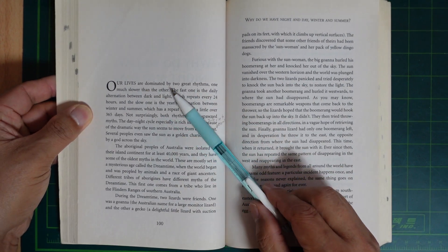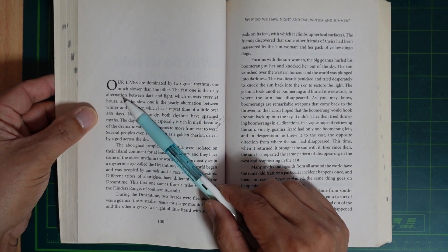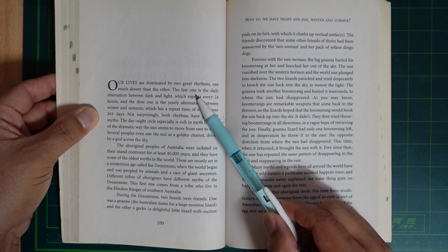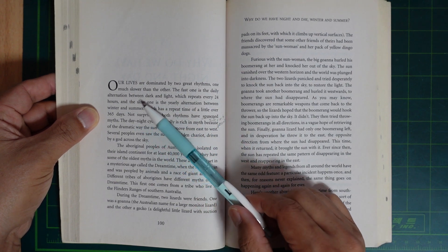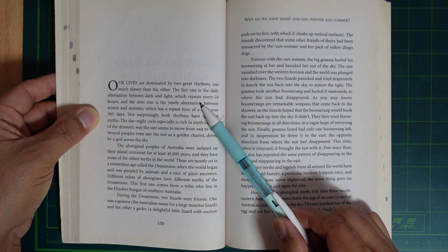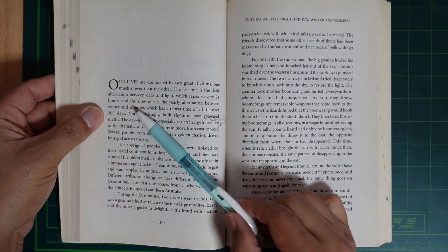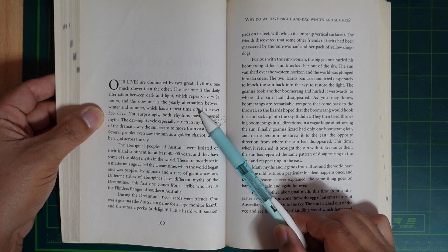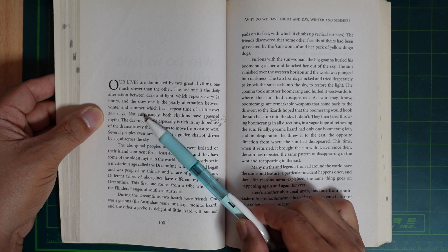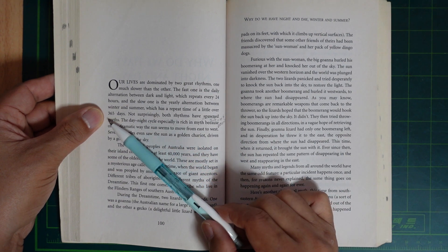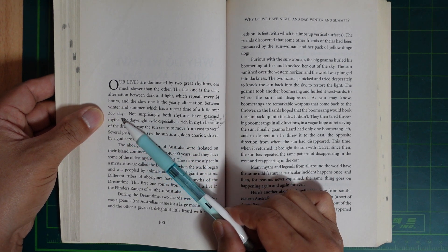Our lives are dominated by two great rhythms. One much slower than the other. The fast one is the daily alternation between dark and night which repeats every 24 hours, and the slow one is the yearly alternation between winter and summer which has a repeat time a little over 365 days.